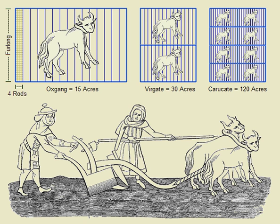Both the International Acre and the U.S. Survey Acre contain 1/640th of a square mile, or 4,840 square yards, but alternative definitions of a yard are used — see Survey Foot and Survey Yard — so the exact size of an acre depends upon which yard it is based. The U.S. Survey Acre is about 4,046.872609874252 square metres.